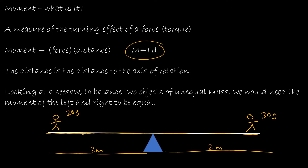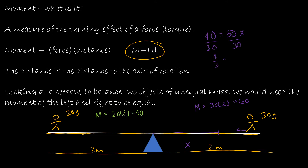This is where moment comes into play, and moment is force times distance. The moment on the left side is 20 times 2, which is 40, and the moment on the right side is 30 times 2, which is 60. I need those two moments to equal one another. So what if I moved the heavier kid in a little bit? I need the moment on the left, which is 40, to equal the force of 30 times the distance x. Solving that, I find the heavier child needs to be 4/3 of a meter from the center.